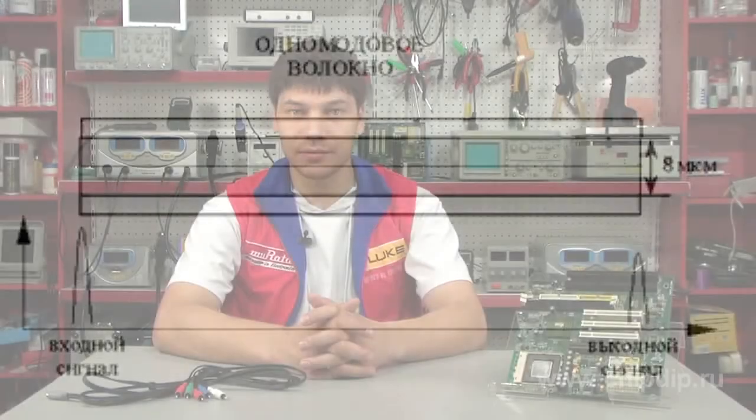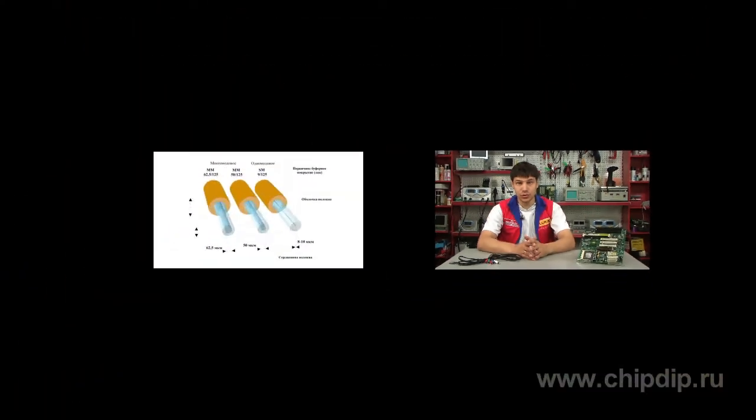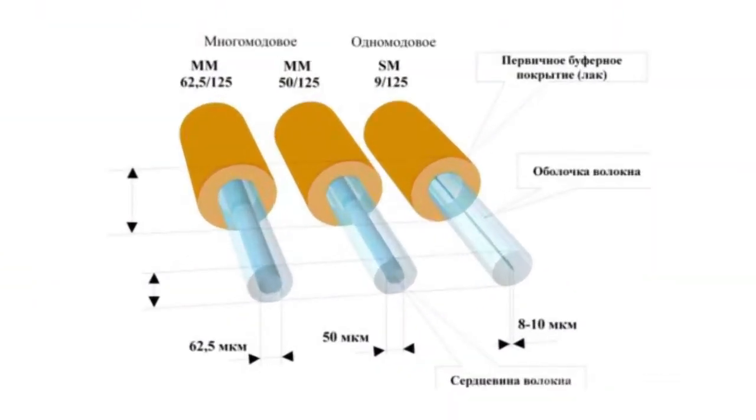Thus, the single-mode fiber has the best performance, transmits a signal to tens of kilometers at a speed of 10 gigabits per second. And it is cheaper. It is easier to manufacture because of the structure homogeneity.